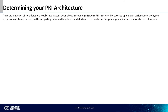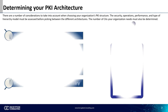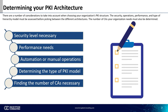Now that we know the different types of models, how do you pick your organization's model? To determine your PKI architecture, you must take into account the level of security and performance needed from the PKI, whether your operations will be manual or automated, and what type of model you will design your PKI to follow. Some example model types could be splitting the CAs into different business sectors or setting up certificate authorities based on network location.